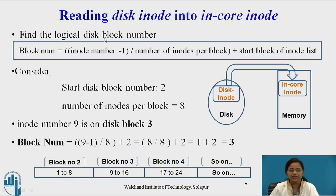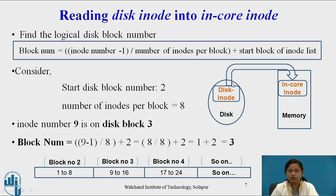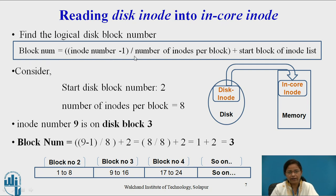Once the process gets the in-core i-node using the iGET algorithm, it is the task of the kernel to get the content of the disk i-node into the in-core i-node. For that purpose, the kernel has to find the logical disk block number using the formula: block number = (inode_number − 1) / (number of inodes per block) + start block of inode list, where the slash operation gives the integer part of the quotient.